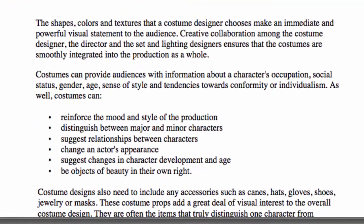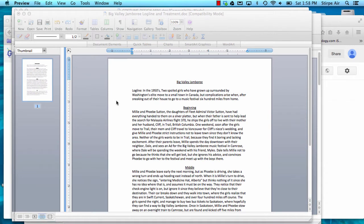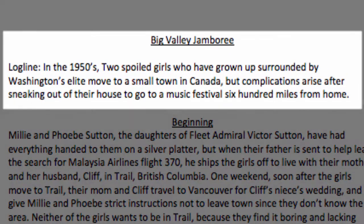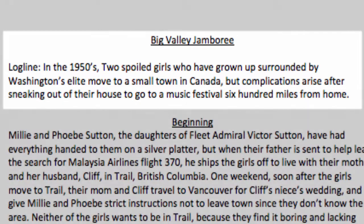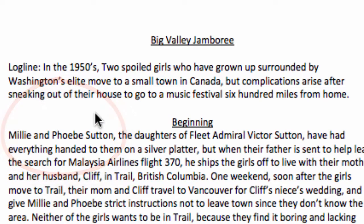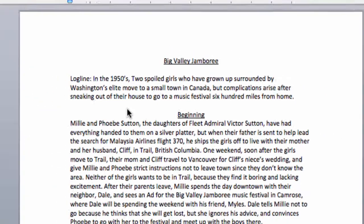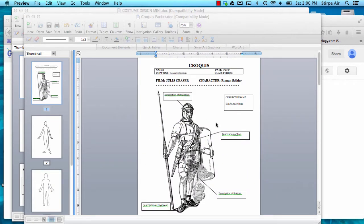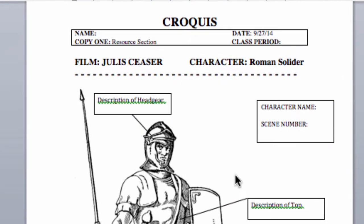So where do we start when designing a costume? We go into the script and the director's treatment. I'm working with the following treatment, where one of my costumes will come from. This is the logline: in the 1950s, two spoiled girls who have grown up surrounded by Washington's elite move to a small town in Canada. The complications arise after sneaking out of their house to go to a music festival 600 miles from home. Millie and Phoebe are our characters' names. Now I know who they are, where they live, and the time period I'm working in. Once I know that, I'm going to use something called a croquis to create a costume for this character.